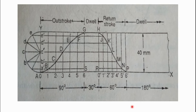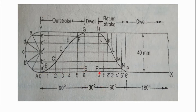First, draw the displacement diagram. For the displacement diagram, take 360 degrees on the x-axis to some scale and on the y-axis take the stroke length of the floor to some scale. On the x-axis, mark 90 degrees for the outer stroke, the next 30 degrees for dwell, the next 60 degrees for the return stroke, and the remaining angle for the second dwell period.